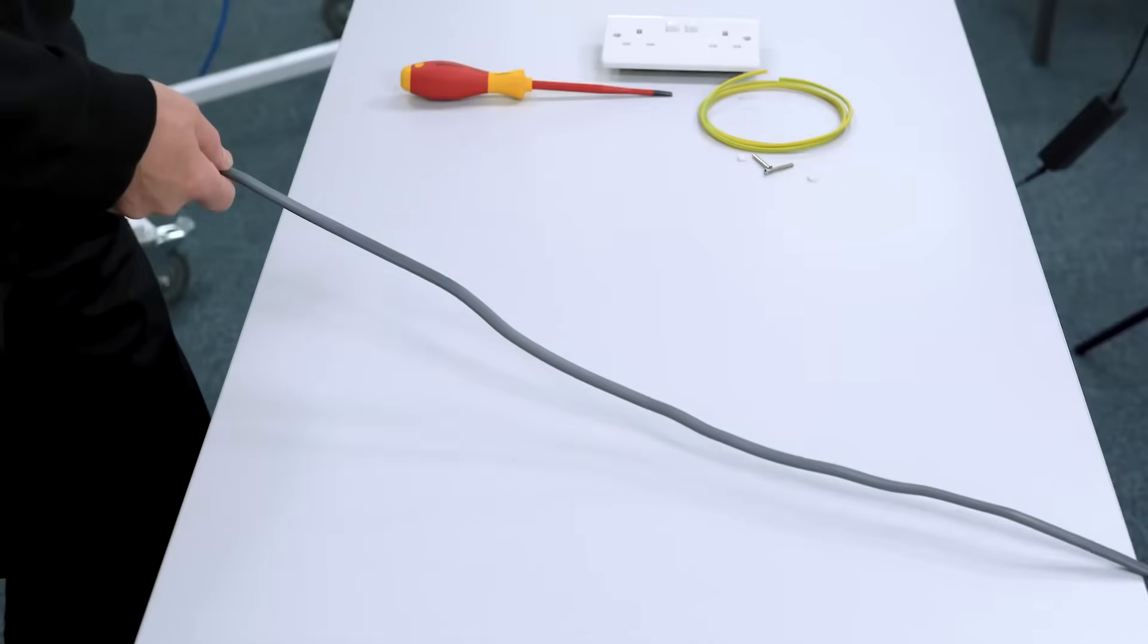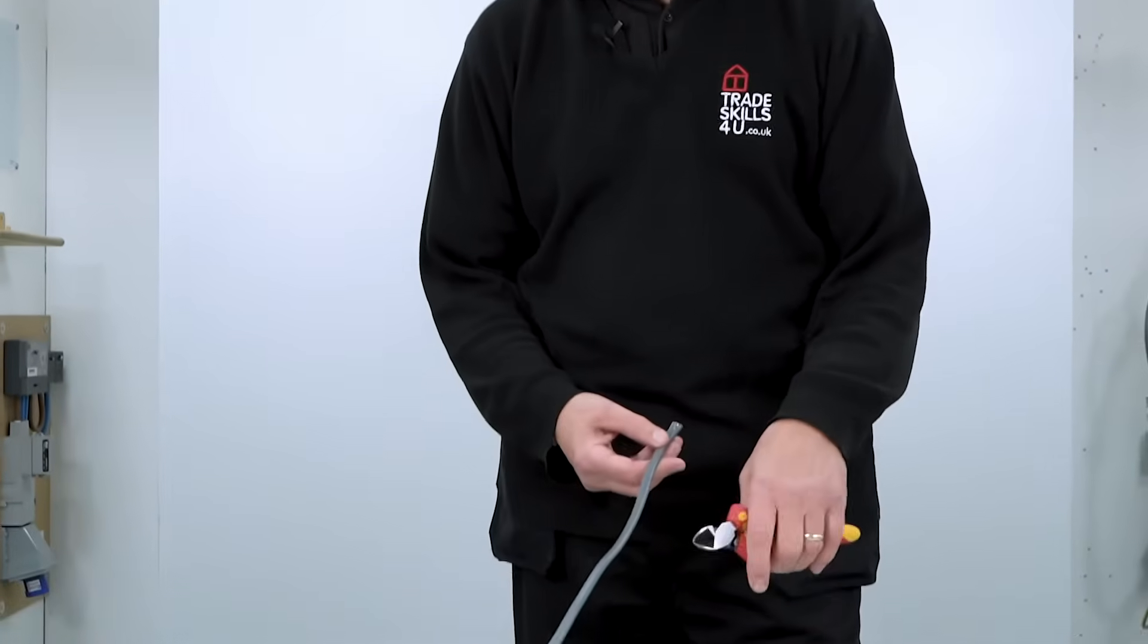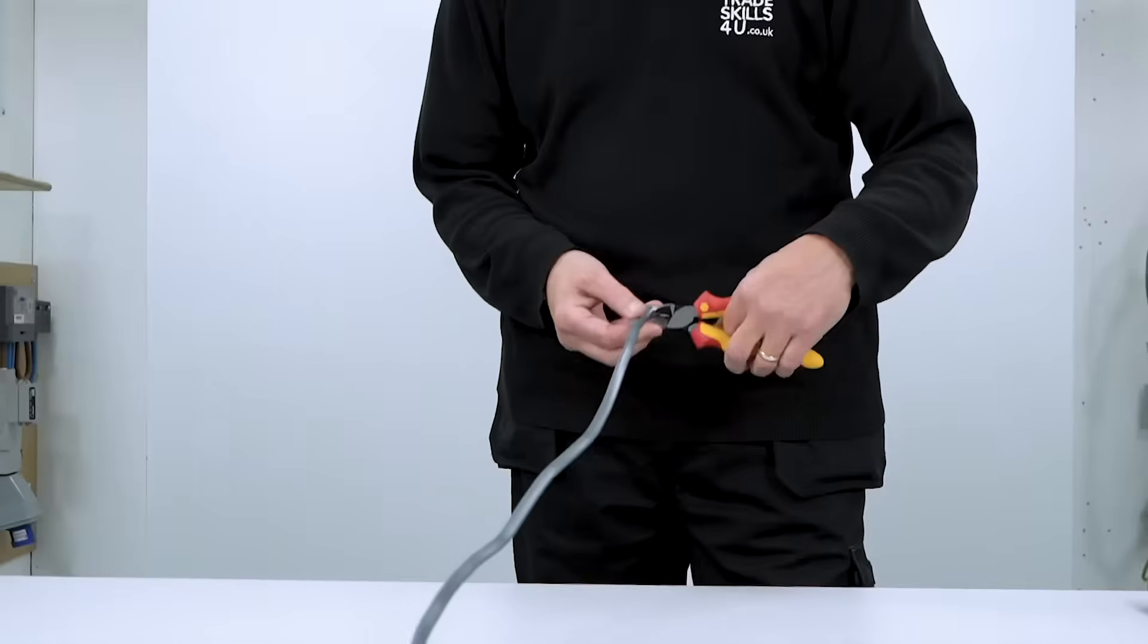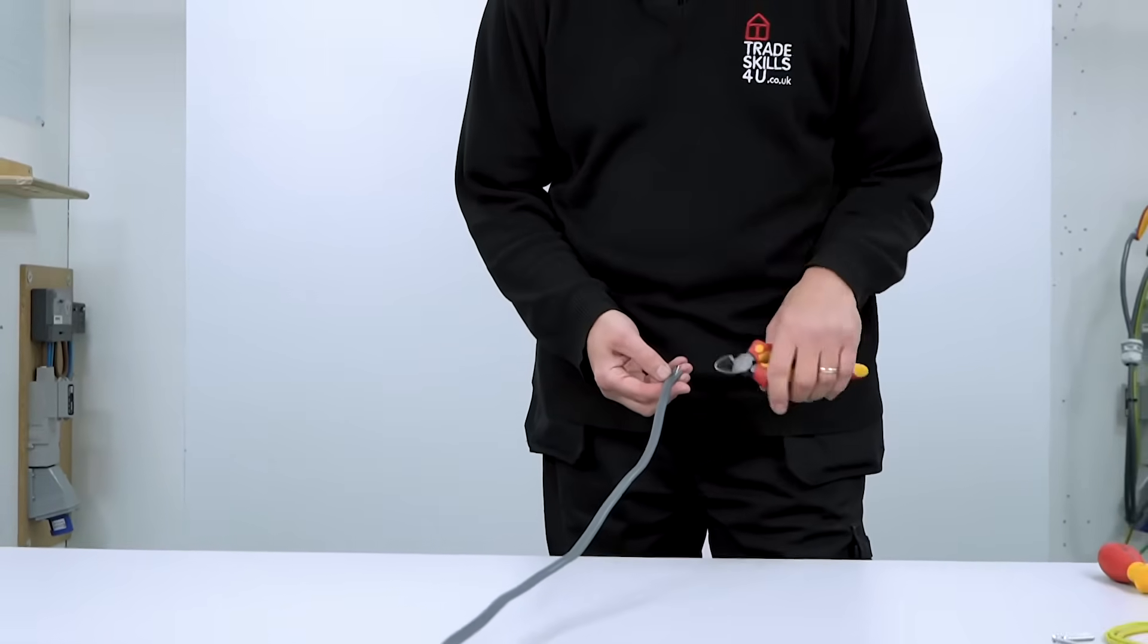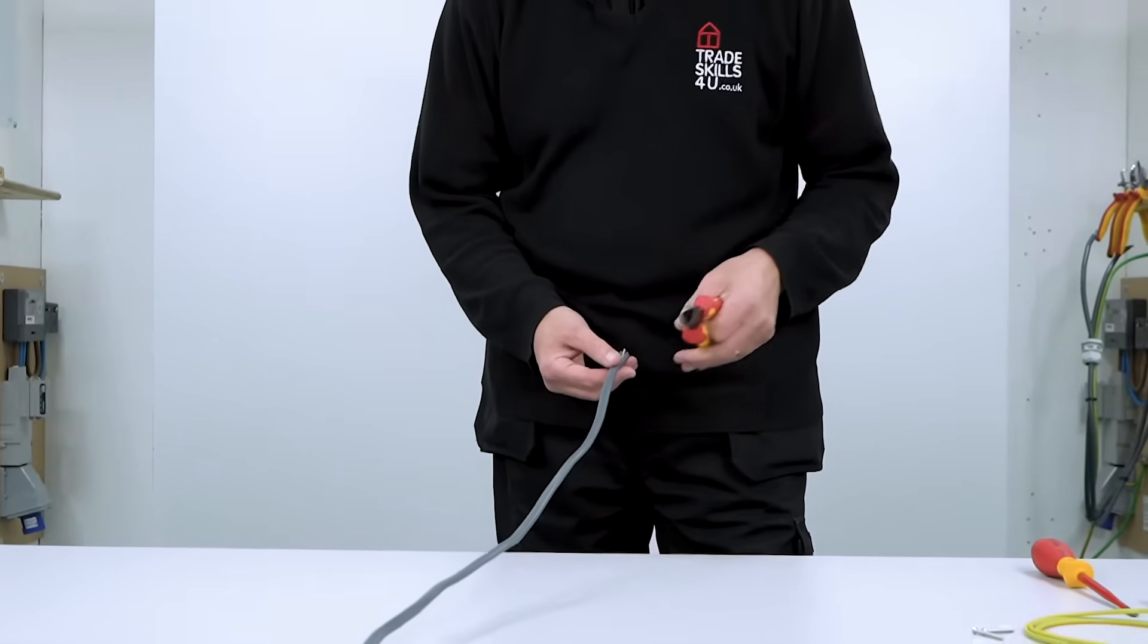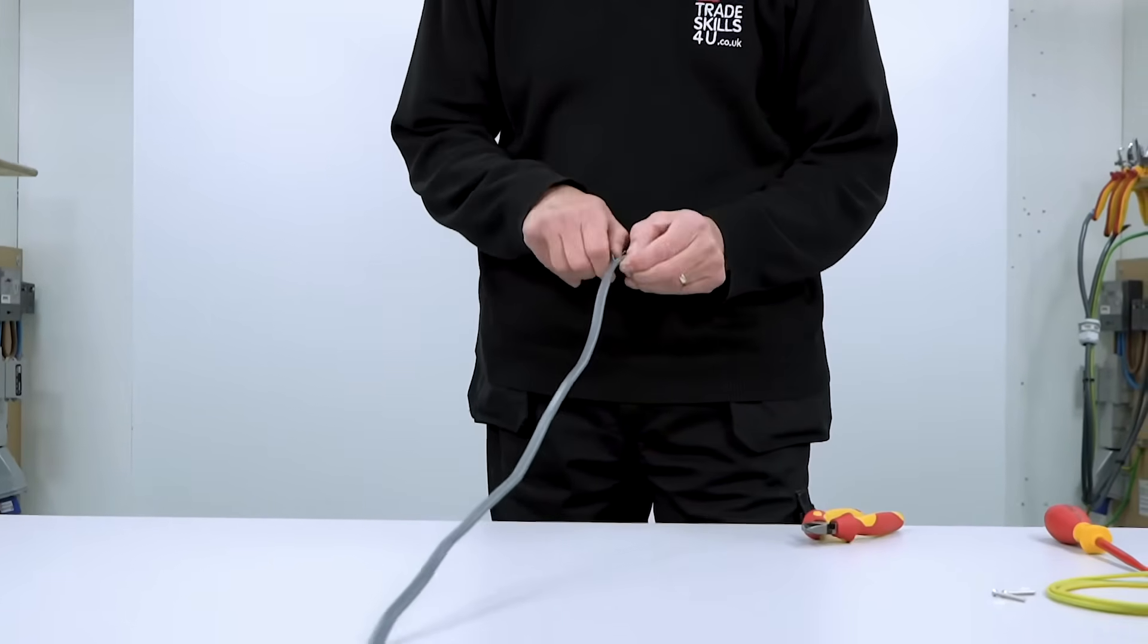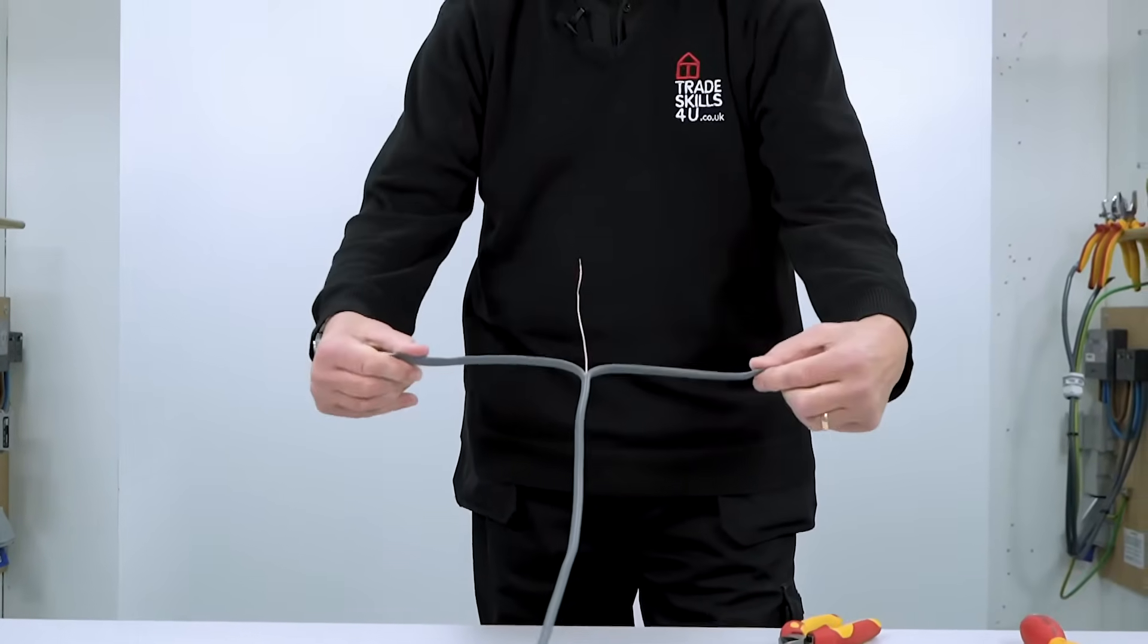This flat profile cable, commonly referred to as twin and earth, we can strip the outer sheath in several ways. Many electricians will just cut down the middle and grab the circuit protective conductor, or the CPC, and use it to strip the outer sheath back. Now the problem is, in a training center such as ours, sometimes the student may pull the CPC right out of the cable. So for this video, I'm just going to show you an alternative way. Still snip down the middle, but now if we just grab the live conductors, that's the brown and the blue, and just pull apart, and there we go, we can strip the cable like so.